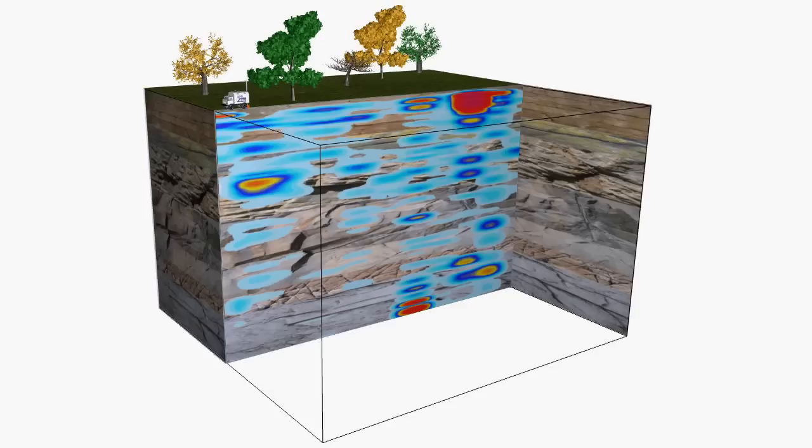Once a number of survey point data sets are collected in a profile section, a two-dimensional image can be created. Here we can see two-dimensional hydraulic permeability data for the surveyed profile line.